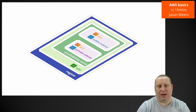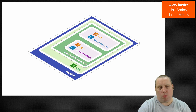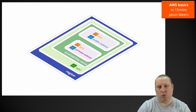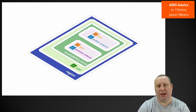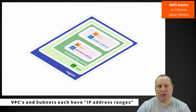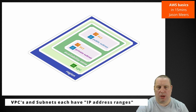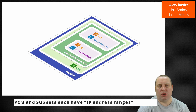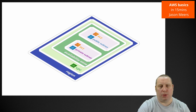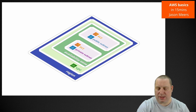Just think of an EC2 instance as a lump of compute — computing power and memory. So we've got one region, and in that region we've got a VPC that includes one availability zone. Inside that VPC I've got a private subnet and a public subnet, and in each of those subnets I've got one EC2 instance — or server, or virtual machine, whichever way you prefer to think of it. We've now got two subnets and two machines — something usable — but we haven't connected it to anything yet.